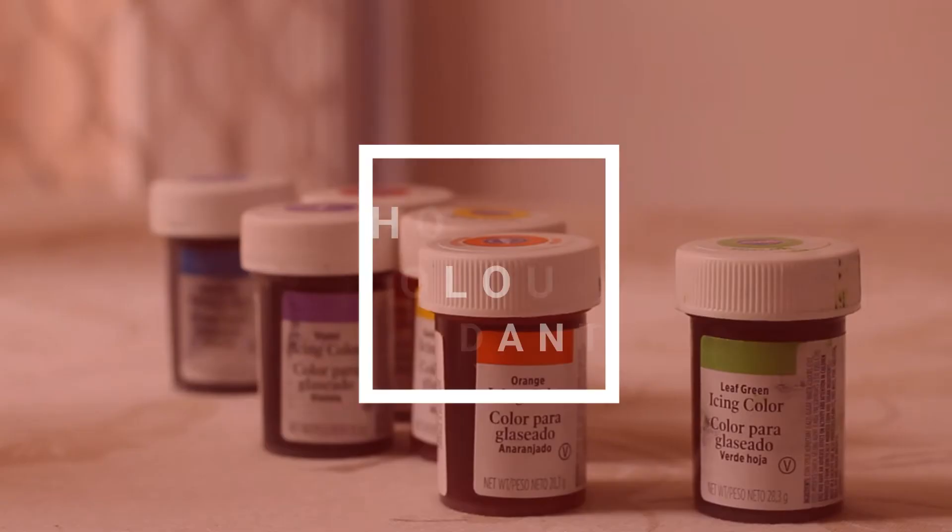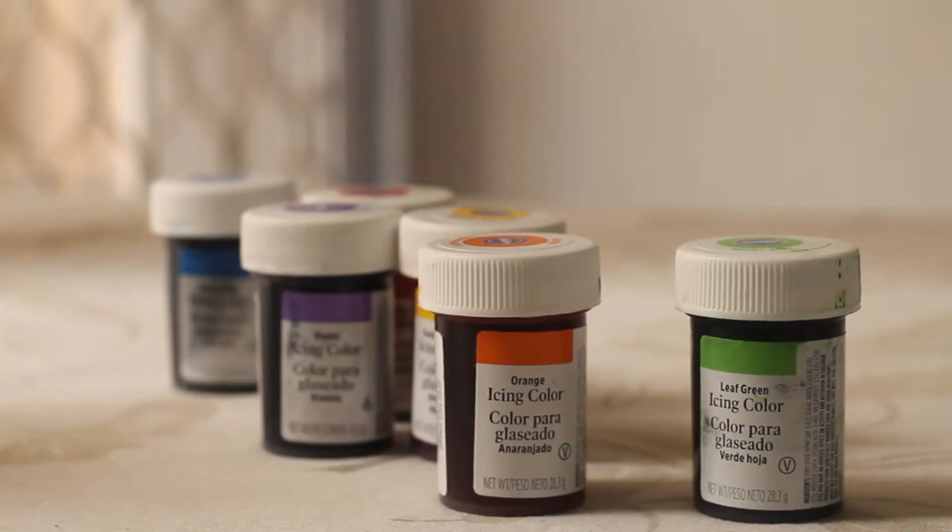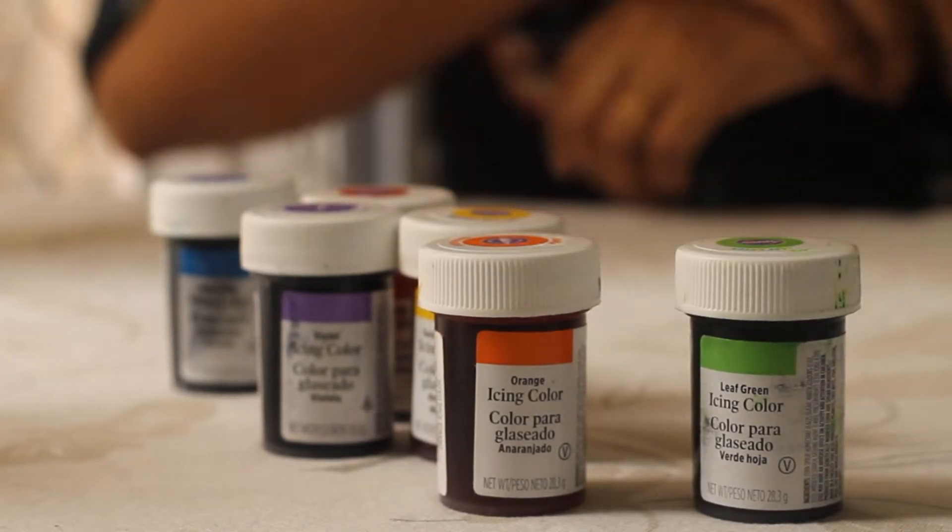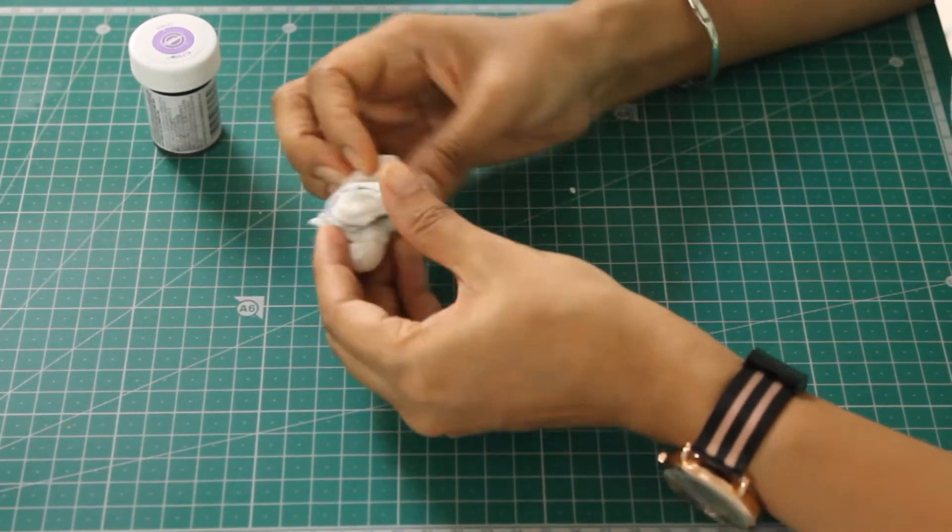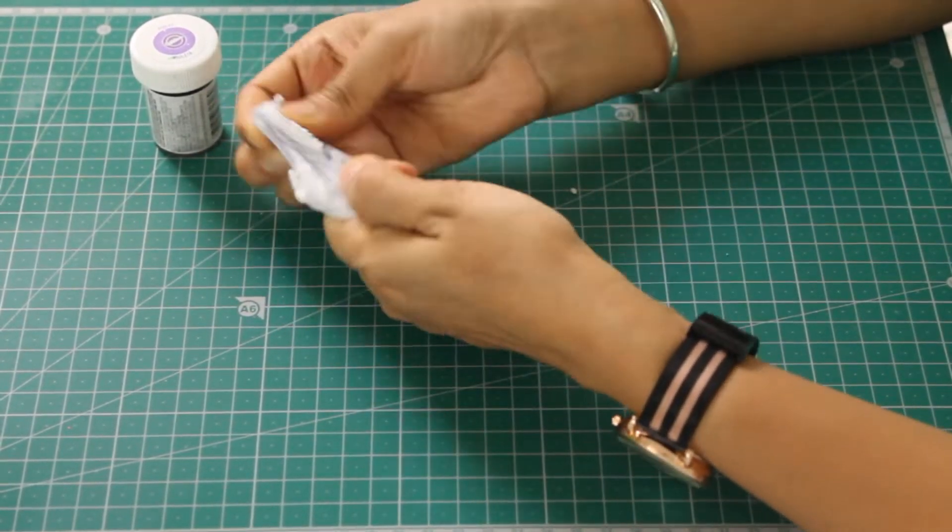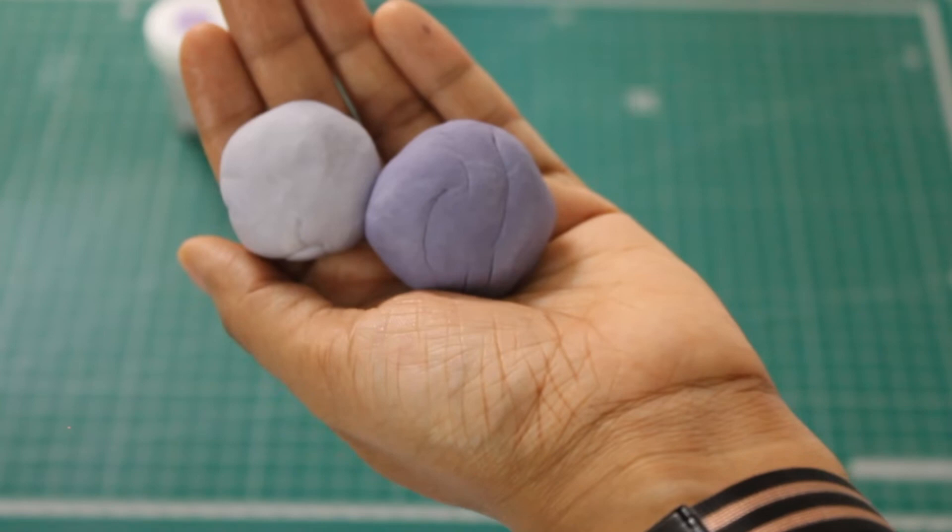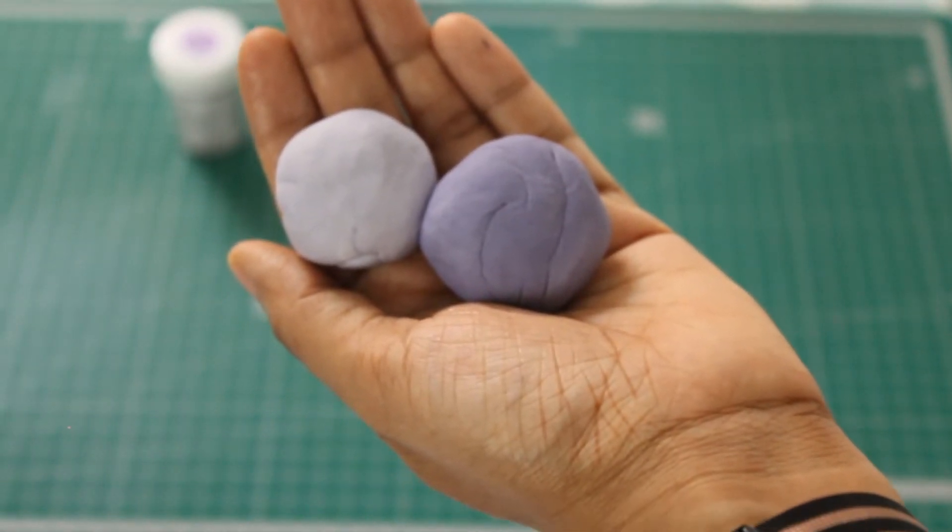How to color fondant. It is recommended to use gel colors with fondant. Take a nice clean toothpick so as not to contaminate the color. Incorporate it well and remember the color deepens if you leave it overnight.